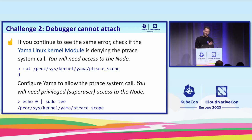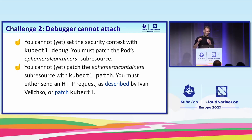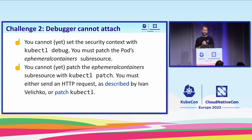On at least one node where I did this, the error didn't go away. I discovered that the Yama kernel module running on that node was denying the debugger's ptrace system call. Because I had privileged access to that node, I could reconfigure the module — just something to watch out for. And finally, today it isn't that easy to set the security context on your ephemeral container. It's not yet supported by the kubectl debug CLI command — you have to send an HTTP request to the API server or patch the kubectl CLI to do it in a slightly different way. But it will be easier in the future.